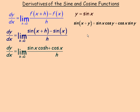We expand out sine of x plus h: it goes sine of the first angle times the cosine of the second angle, plus cosine of the first angle times sine of the second angle. And then of course minus the sine x on the end.